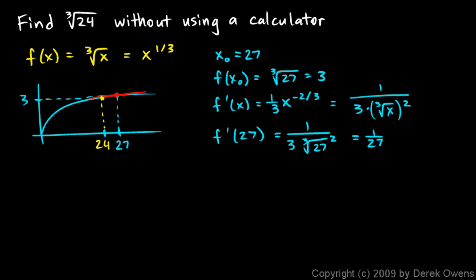So now let's do the linear approximation. f(x) is going to approximately equal f(x0) plus f'(x0) times x minus x0. And that's going to be 24. That's my x value that I'm looking for. Minus 27.